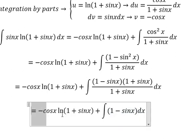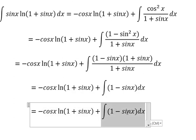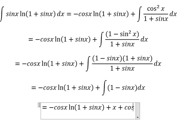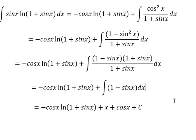And now we have the final answer. The integral equals negative cosine x ln of one plus sine x plus x. The integral of sine x equals negative cosine x, and we add the constant C. This is the end, thank you for watching.